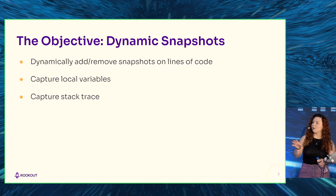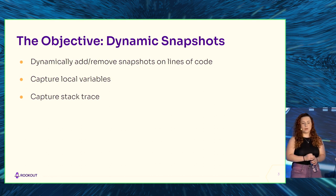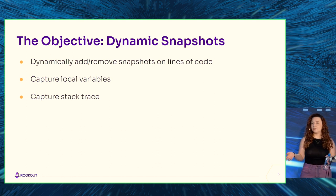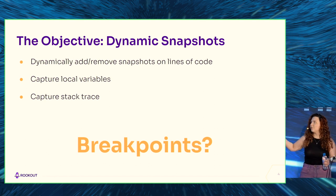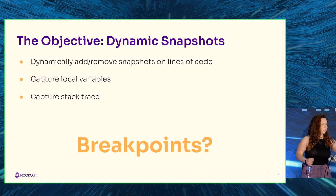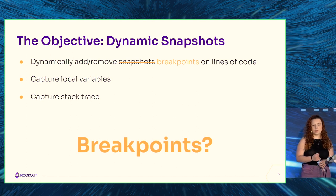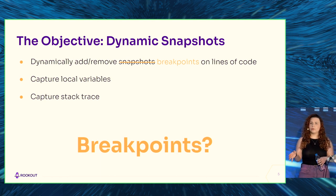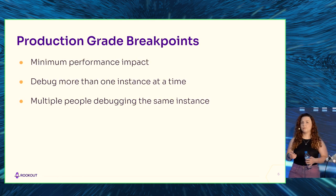Dynamic snapshots are basically these three things. First of all, dynamic snapshots can be added or removed to lines of code dynamically while your code is running. Secondly, they'll capture local variables and stack traces. Now this does sound pretty similar to breakpoints - this is basically what a breakpoint does. You can add it or remove it to lines of code dynamically while your code is running, and it captures local variables and stack traces.